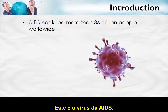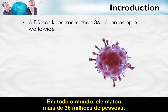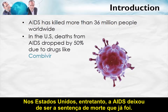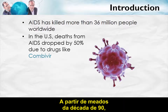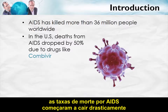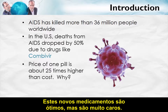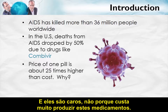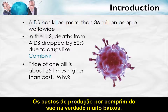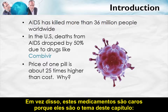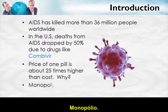This is the AIDS virus. Worldwide, it has killed more than 36 million people. In the United States, however, AIDS is no longer the death sentence that it once was. Beginning in the mid-1990s, death rates from AIDS began to fall dramatically with the introduction of new drugs, such as Combivir. These new drugs are great, but they're expensive — and not because it costs a lot to manufacture them. The per-pill costs of production are actually quite low. Instead, these drugs are expensive because of the subject matter of this chapter: Monopoly.